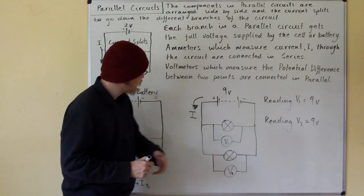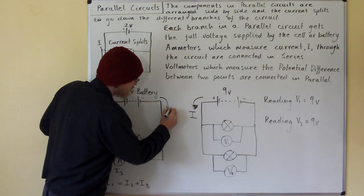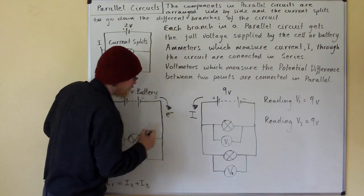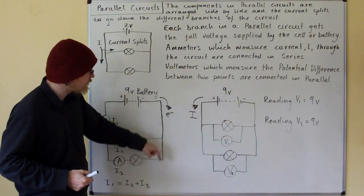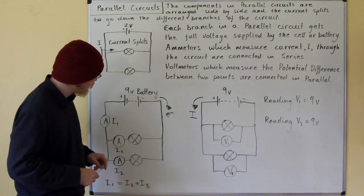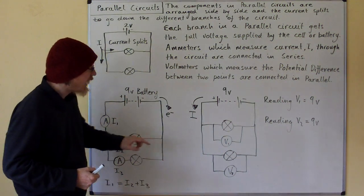The electrons go from negative to positive, so that's the way the electrons go, but the conventional current goes from positive to negative. We've connected our ammeters in series.